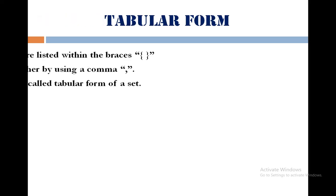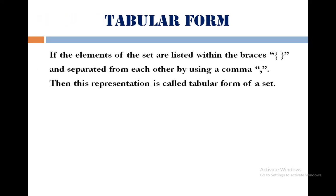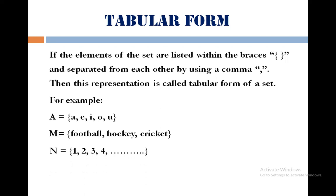Next we have tabular form. If the elements of the set are listed within the braces and separated from each other by using a comma, then this representation is called tabular form of a set. Examples: A equals a, e, i, o, u. You may speak A equals a e i o u. Understood that after the first element comma will be utilized. Next we have M equals football, hockey, cricket. And next we have M equals 1, 2, 3, 4 so on.